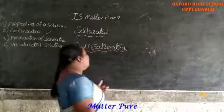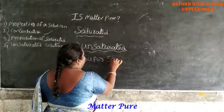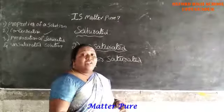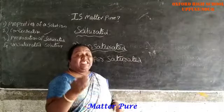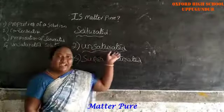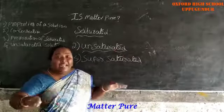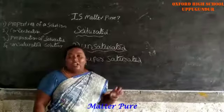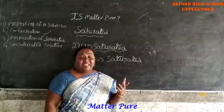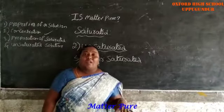It is called unsaturated solution. Next, supersaturated — what is meant by supersaturated? The solute will dissolve in the solvent by increasing temperature; such a solution is called a supersaturated solution. For example, if I added four tablespoons and it dissolves — that is unsaturated. If I add a fifth or sixth spoon and it will not dissolve — that is saturated. But if I increase the temperature, the sugar or salt will dissolve in water; such a solution is called a supersaturated solution.